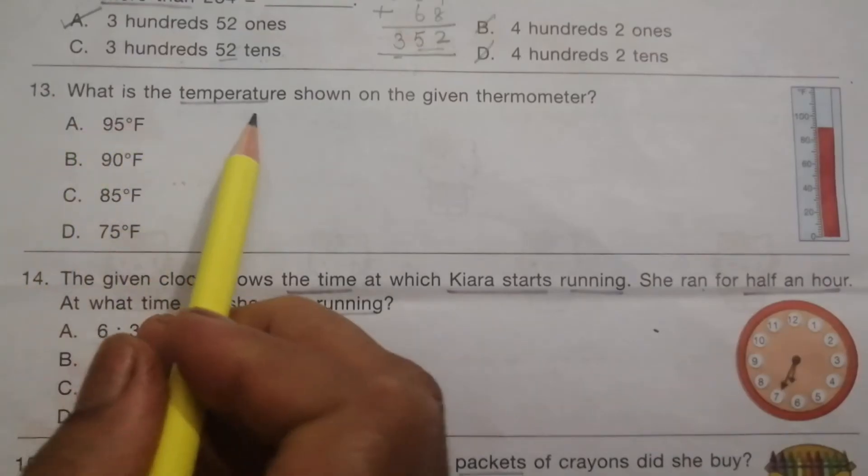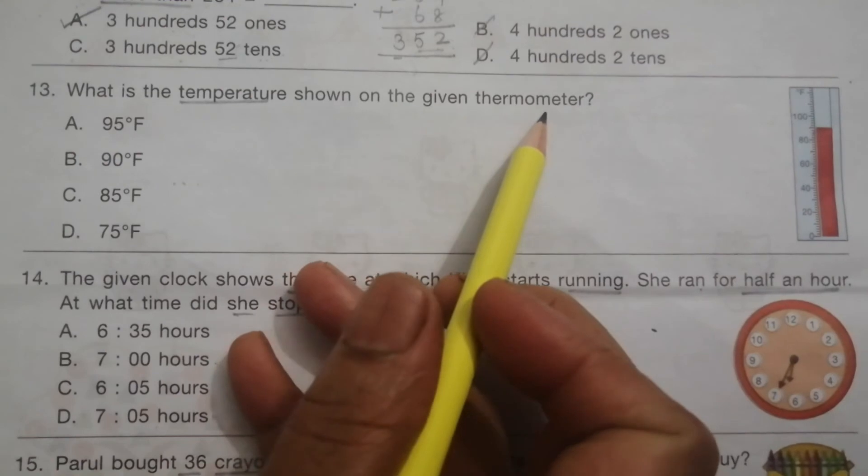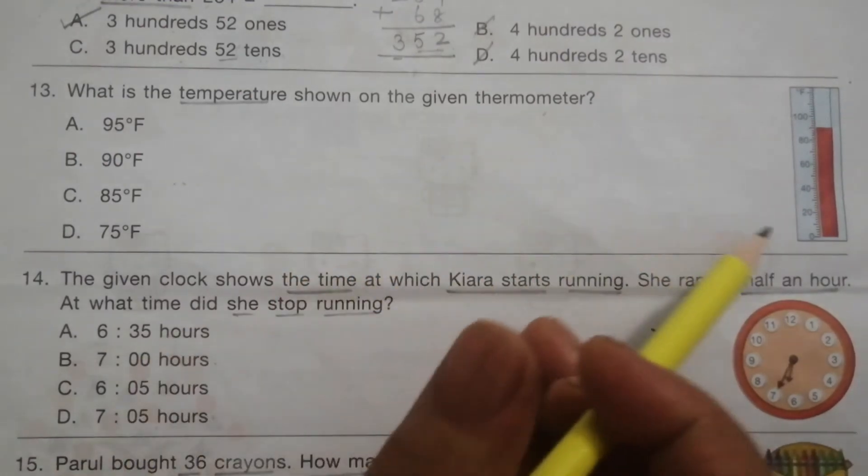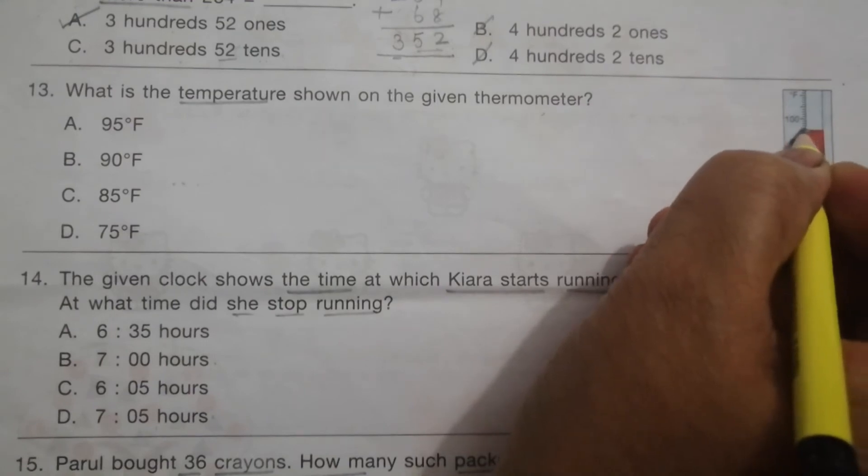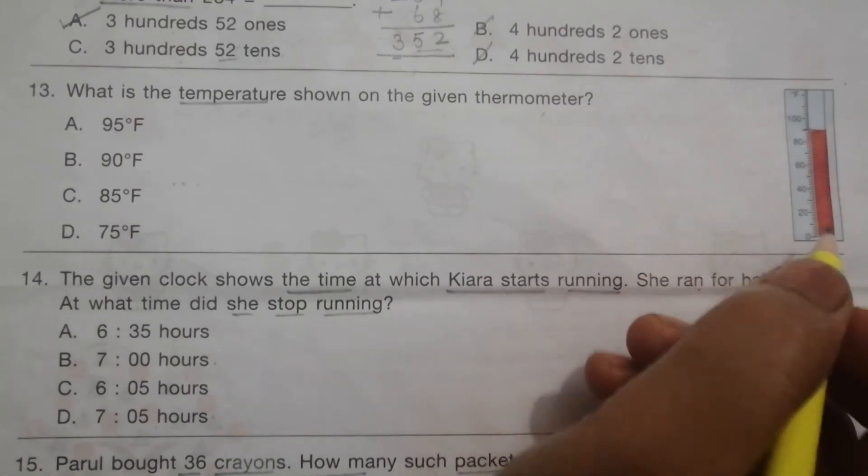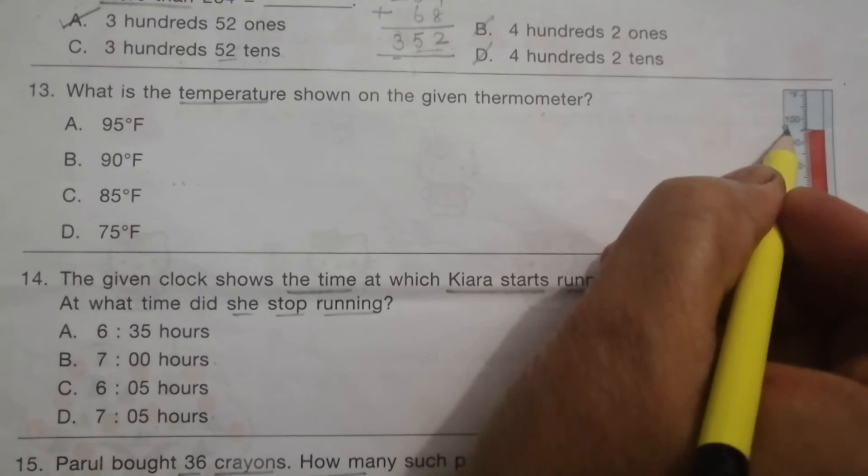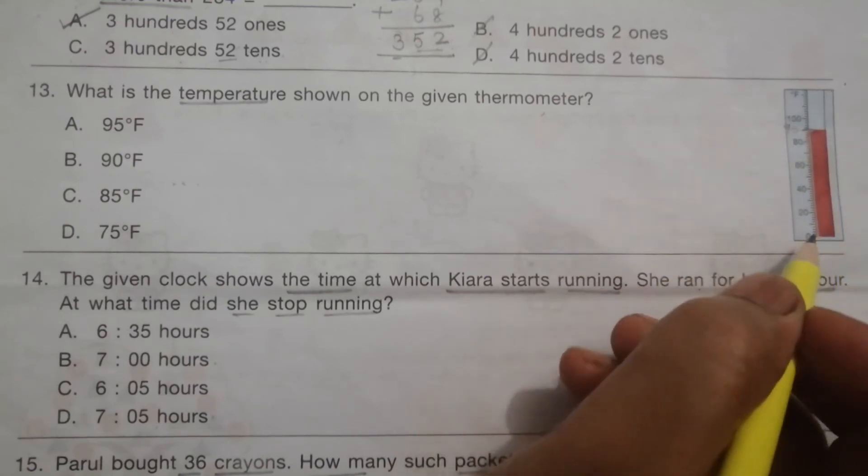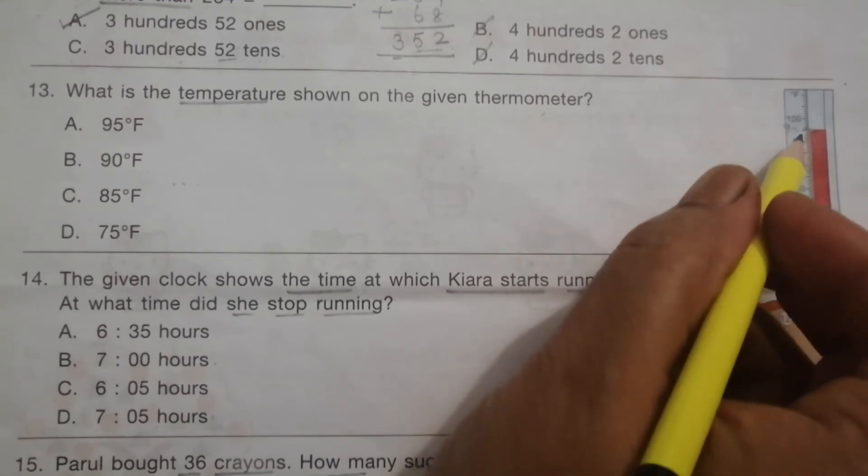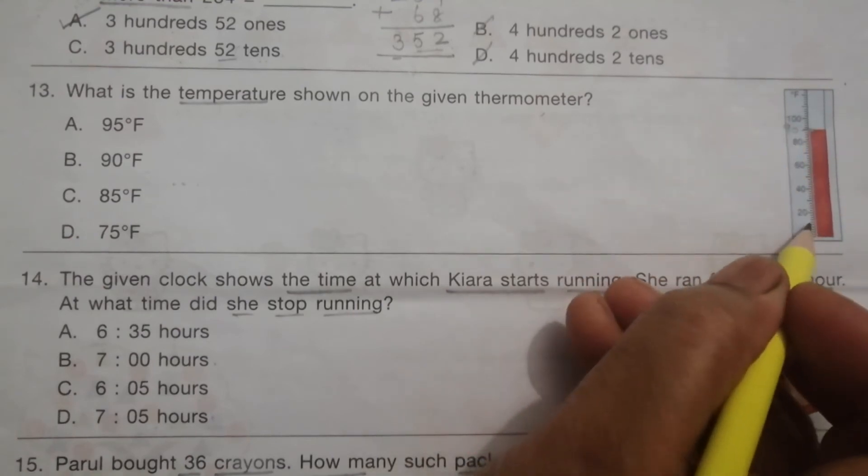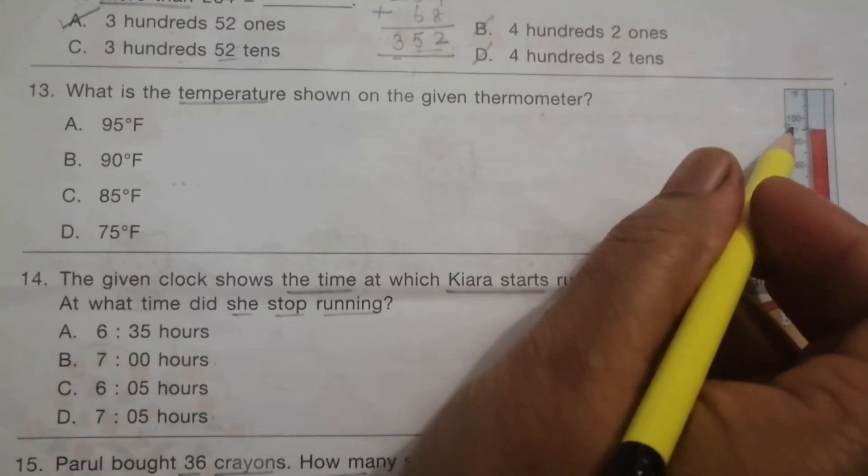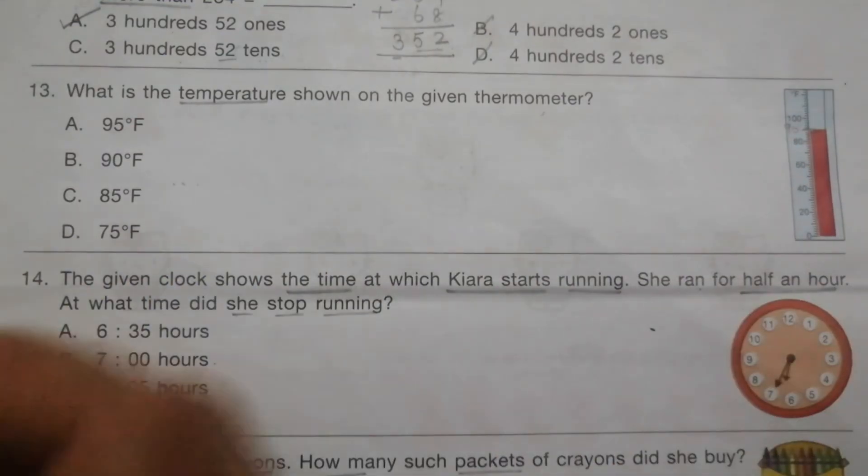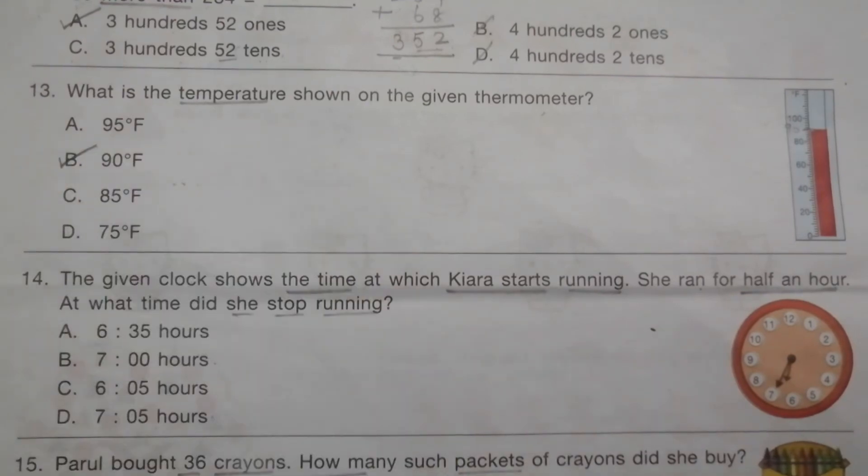Problem 13: What is the temperature shown on the given thermometer? Here it indicates this line. This is 80, next one is 90. The lines go 0, 20, 40, 60, 80, 100. So the next big line is 10: 0, 10, 20, 30, 40, 50, 60, 70, 80, 90. So the answer is B, 90 degrees Fahrenheit.